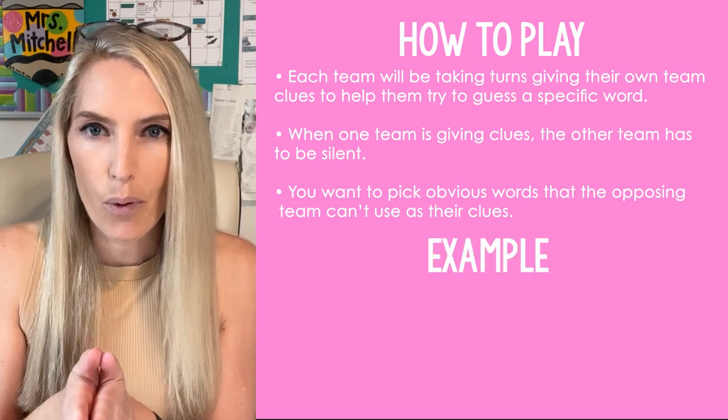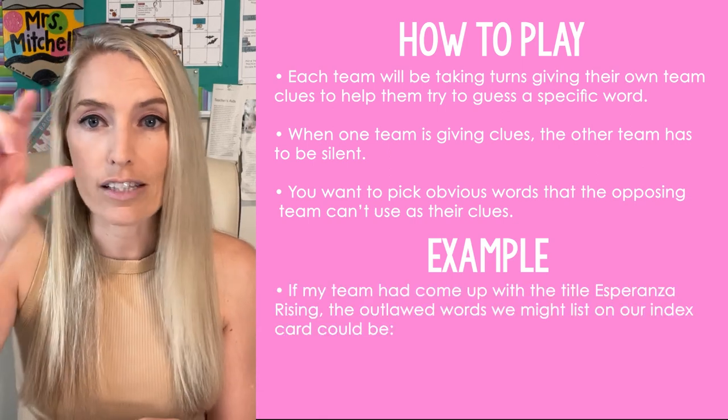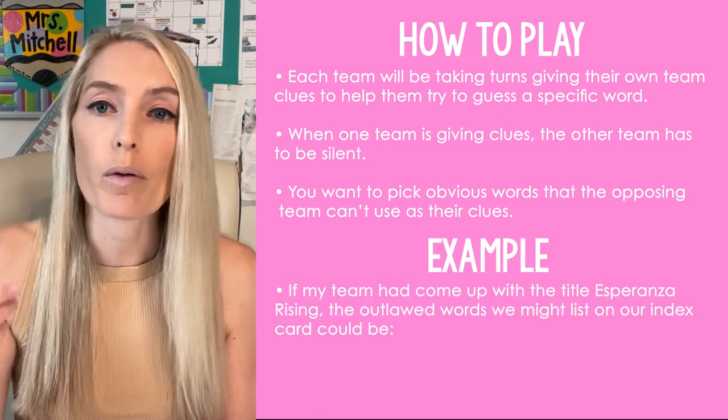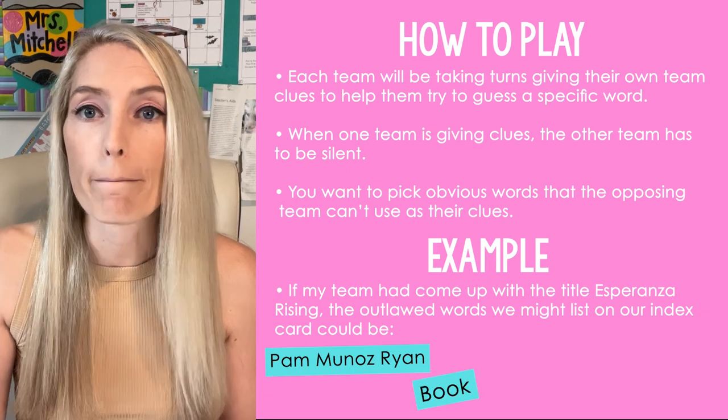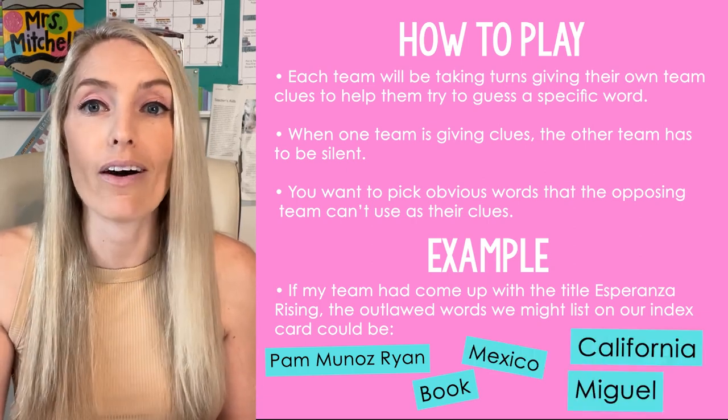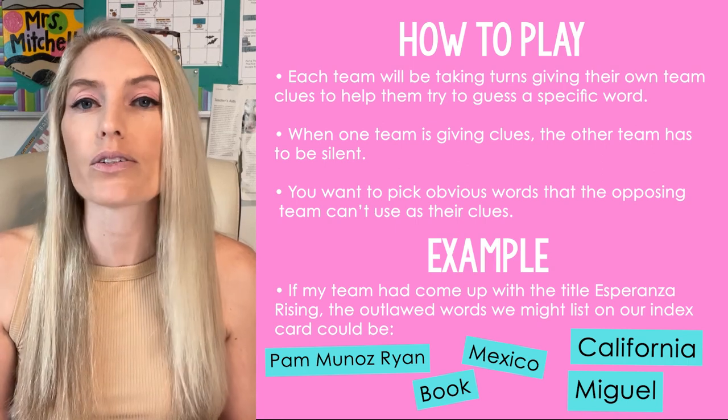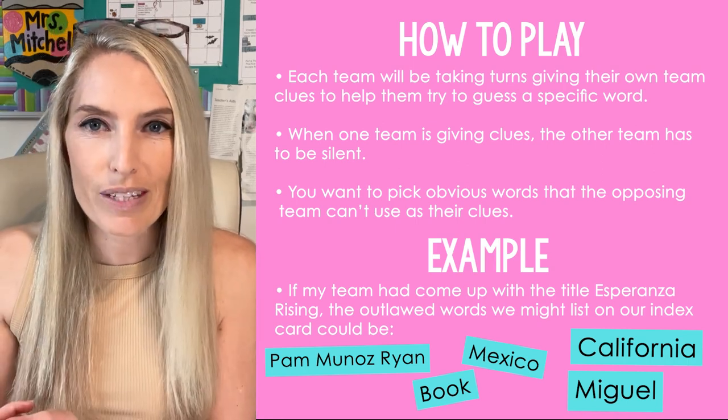For example, if my team had come up with the title Esperanza Rising, the five outlawed words we might list on our index card would be something like Pam Munoz Ryan, book, Mexico, California, and Miguel — because those would be obvious clues we wouldn't want the opposing team to use. The beauty of students creating the topics and outlawed words is that the game hasn't even started yet and they're already reviewing content from the year, strategizing over which words should be outlawed, and thinking more critically about the topics.